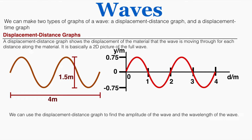We can make two types of graphs of a wave: a displacement-distance graph and a displacement-time graph. A displacement-distance graph shows the displacement of the material the wave is moving through for each distance along the material — it's basically a 2D picture of the full wave. Here I have a wave with a height from top to bottom of 1.5 meters and a length of 4 meters. On the displacement-distance graph, the amplitude is 0.75 meters because that's how far the highest point is from the midpoint of the wave, not from the very bottom. This graph shows the displacement of the material for any distance along the material.